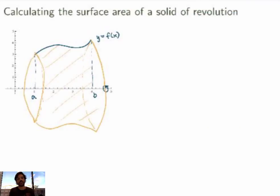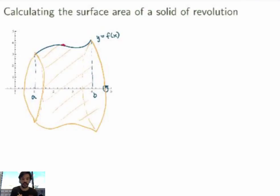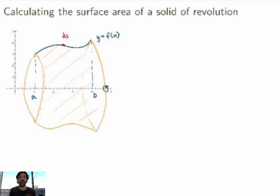The idea is the same as always: somehow I want to slice the problem into manageable slices, calculate the area of each of these slices, and then sum them up to get the total surface area of the solid. So I'll first look at a small segment of the curve which has length ds, where ds is the line element we introduced when we studied arc length of curves.